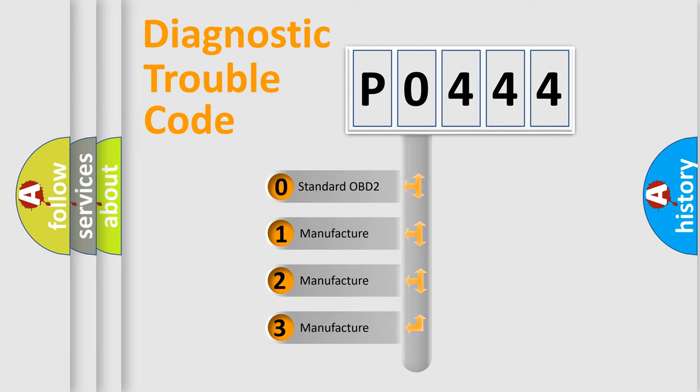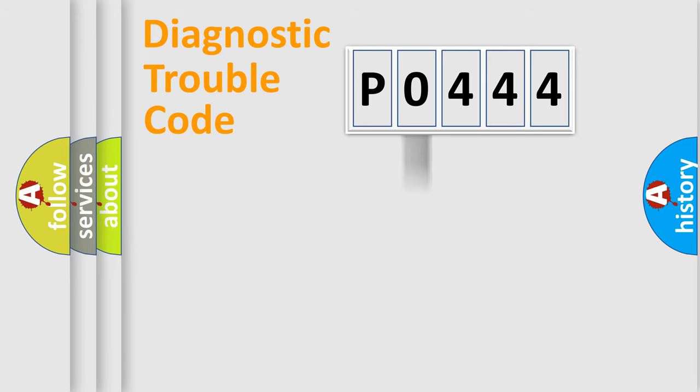If the second character is expressed as zero, it is a standardized error. In the case of numbers 1, 2, or 3, it is a manufacturer-specific expression of the car-specific error.